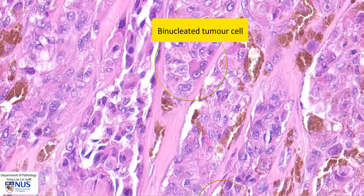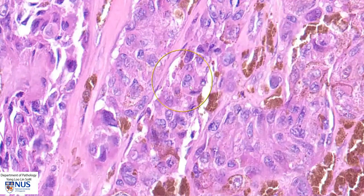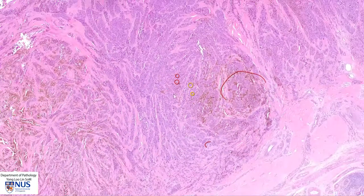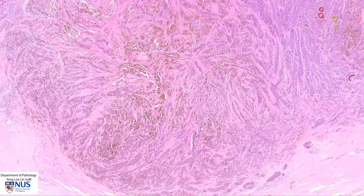Here we see a binucleated tumor cell, which is also fairly commonly seen in melanomas, and there is another much smaller but also binucleated tumor cell. So we have these sheets and nests of malignant polygonal cells infiltrating into the dermis, and some of the cells have cytoplasmic melanin pigment.